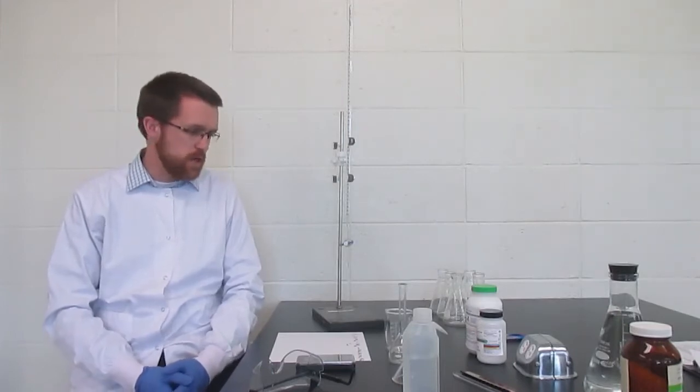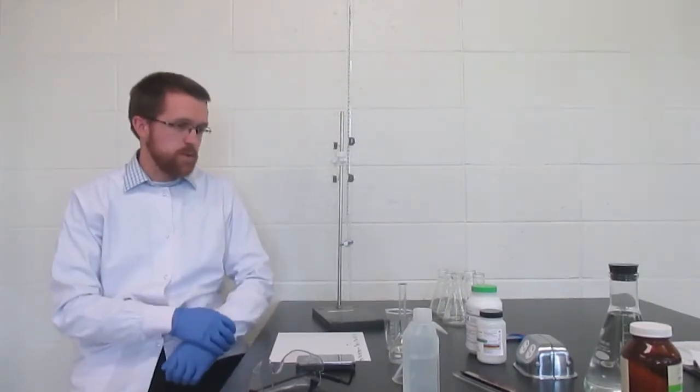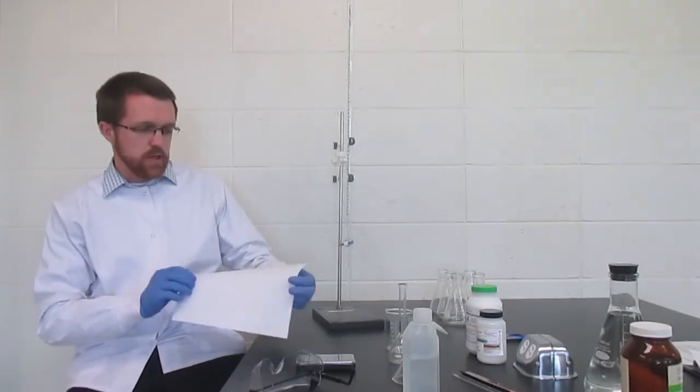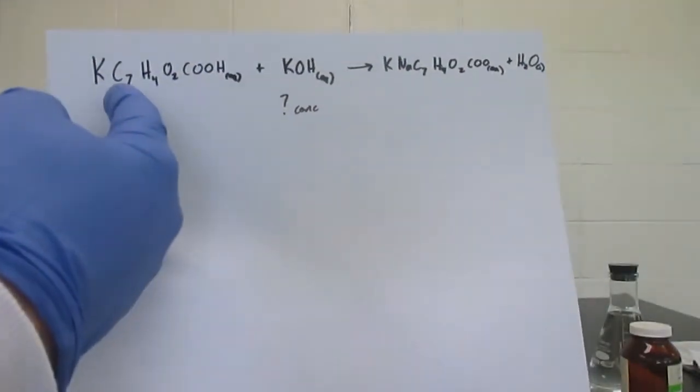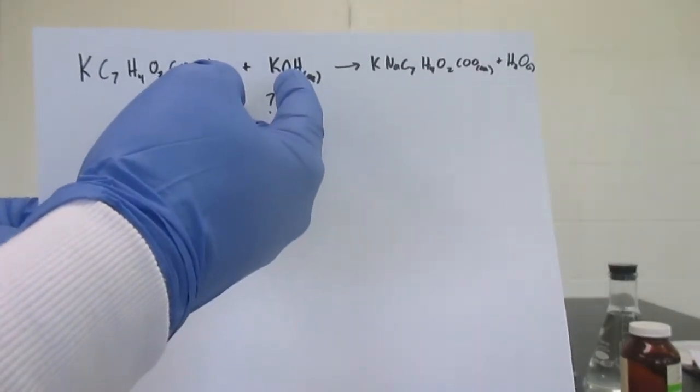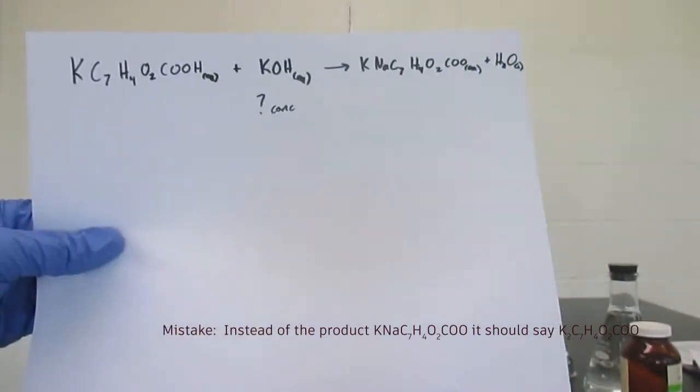We're going to be titrating KHP or potassium acid phthalate with potassium hydroxide. I've written down the chemical equation here. Don't let it scare you too much. This thing here is just an acid, that's our KHP. Here's our potassium hydroxide, a strong base, and here's what results from the neutralization reaction.